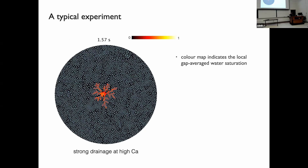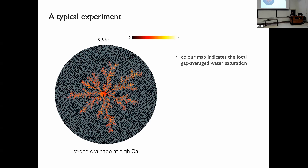Here is a movie of a typical experiment — a drainage experiment at high capillary number. The invading water forms dendritic patterns very prototypical of viscous fingering. The color bar refers to the gap-averaged saturation of water, where red corresponds to approximately 50% — meaning 50% of the 100-micron gap is now saturated with water and the rest is still oil.